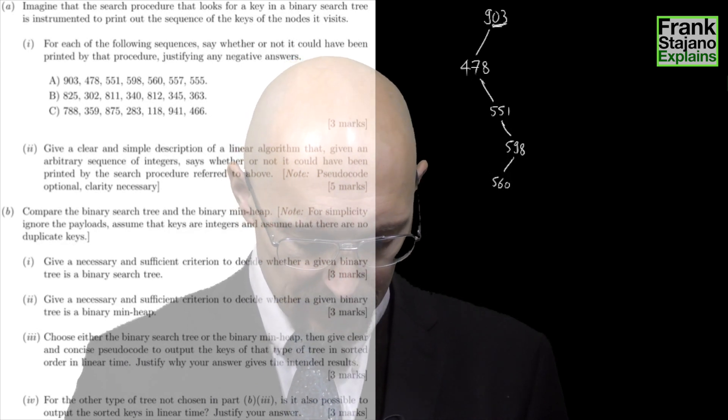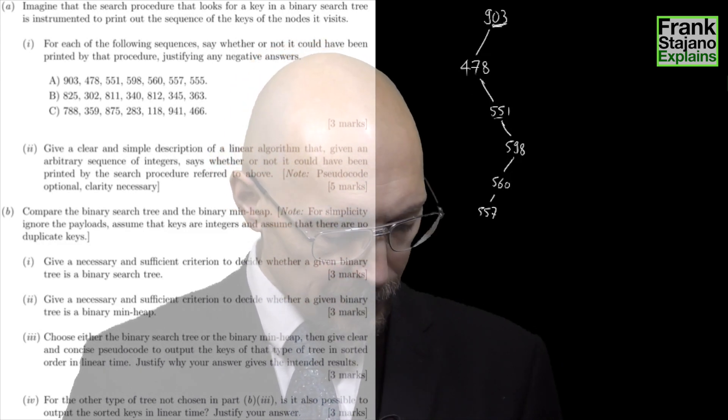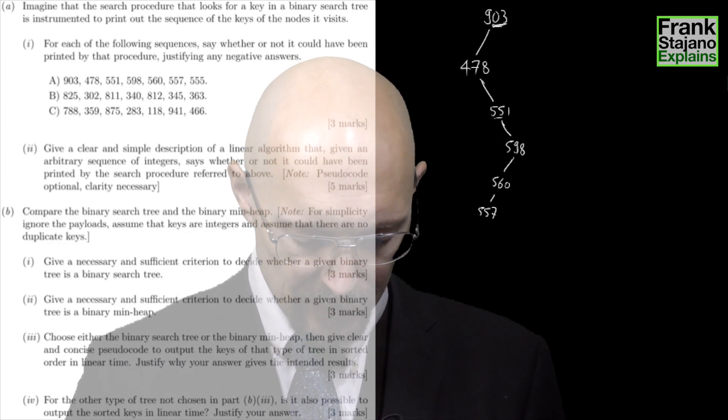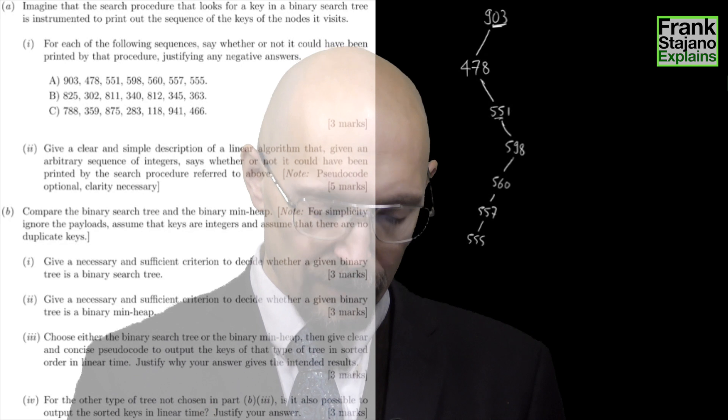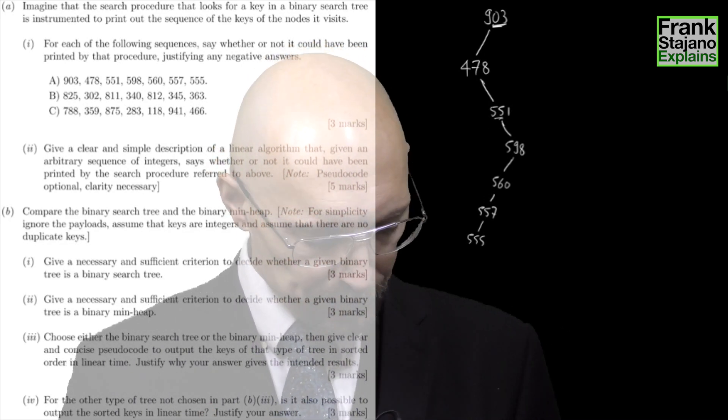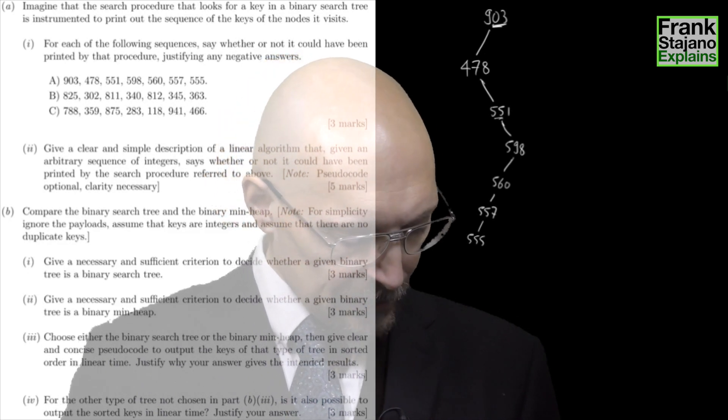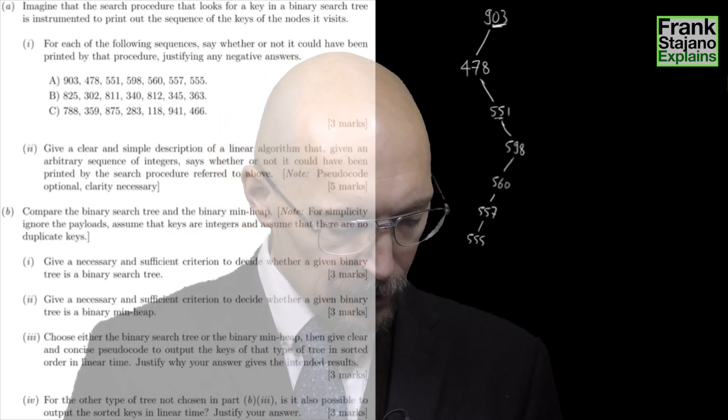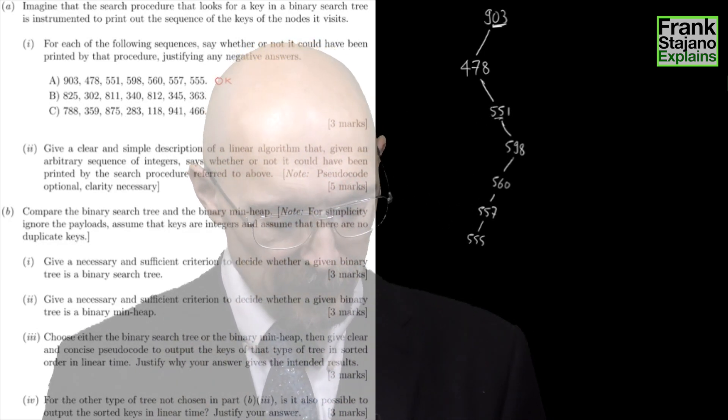Then 560, then 557, then 555 still bigger than 551 so I'm not violating any of the prior things. So this one looks like it could have been printed by the visit of a binary search tree.